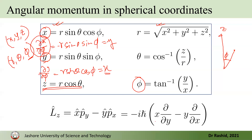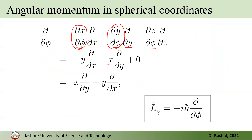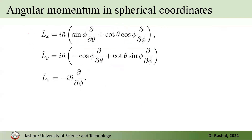Recalling that Lz equals (x ∂/∂y minus y ∂/∂x) multiplied by −iħ, dividing both sides by −iħ, we find that Lz = −iħ ∂/∂φ. This is the simplest expression. For the other components Lx and Ly, with a bit more math one can express them in spherical polar coordinates as well.